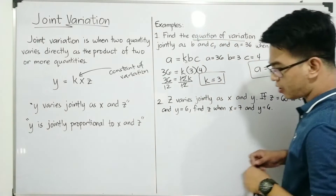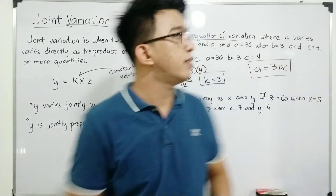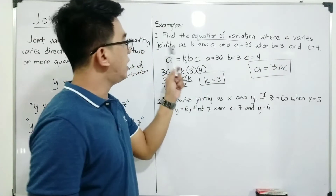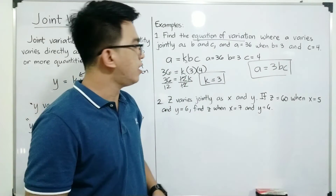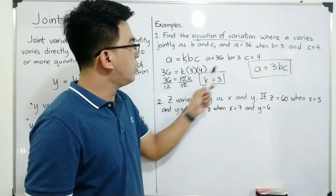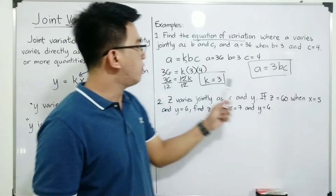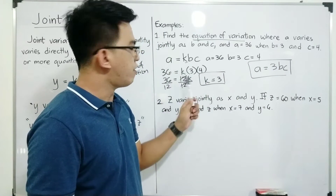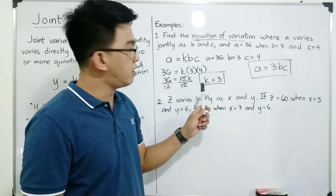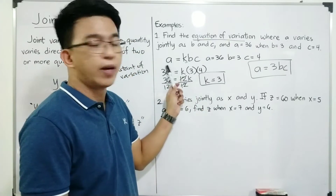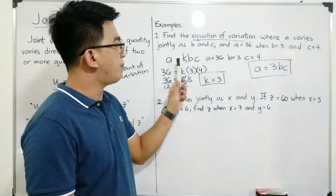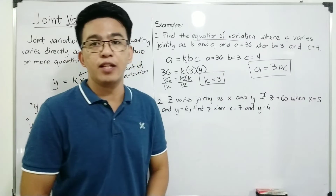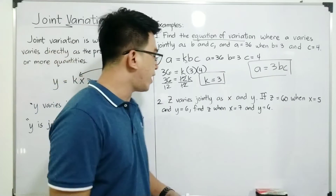Again, our steps are: first, translate — a varies jointly as b and c. Then use the three given variables to find your constant of variation. After finding the constant of variation, go back to the equation and replace your k. The answer is a is equal to 3 times b times c. Let's continue.